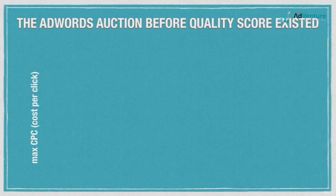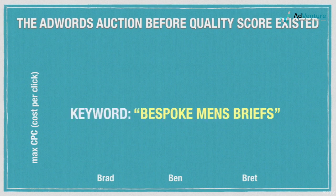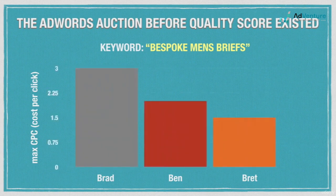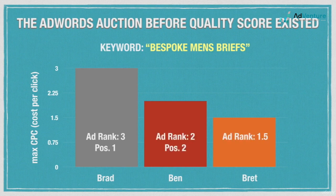Let's take a look at an example auction. Let's say Brad, Ben, and Brett all run online shops that specialize in custom-tailored men's briefs. Each of them tell Google to show their ads when someone searches for "bespoke men's briefs" — that'll be our keyword. Brad sets his max CPC for that keyword at $3. Ben sets his max CPC at $2. And Brett's only willing to pay about $1.50 per click for that specific keyword. So back in the early days, Brad would win the top ad slot, or position one, since he had the highest max bid. Ben would take the second spot, and Brett would take the third spot.